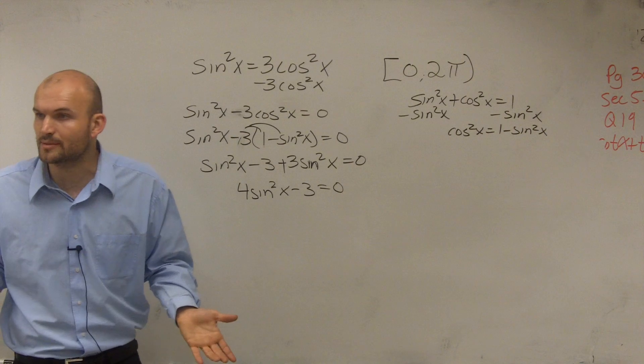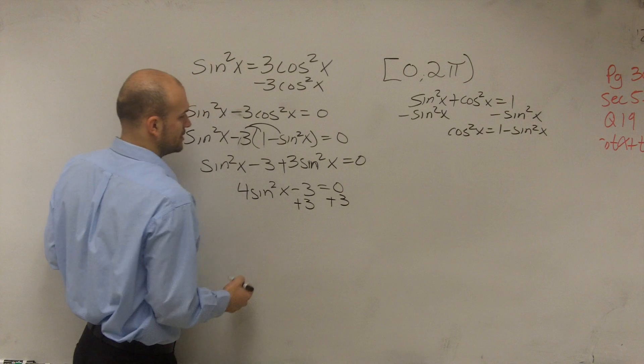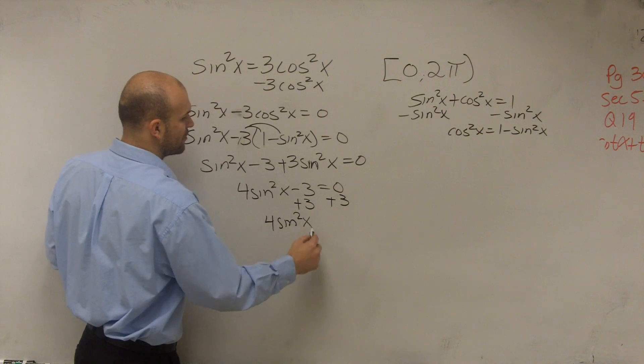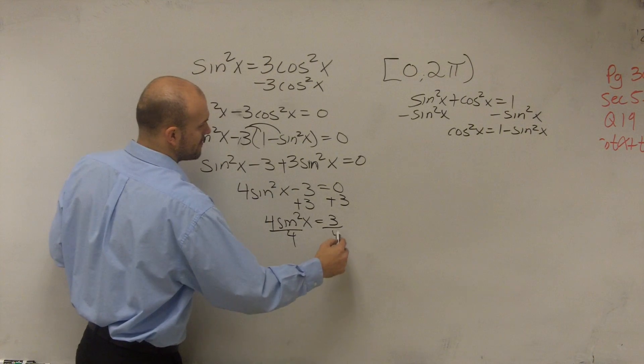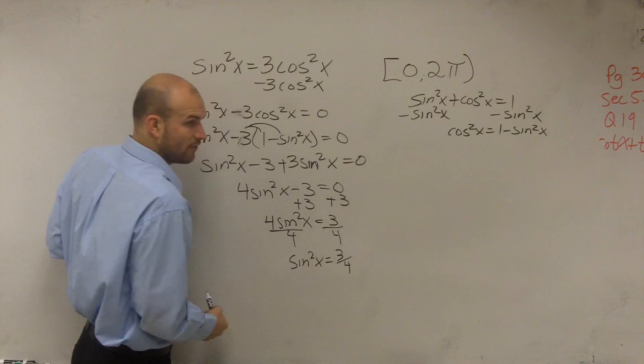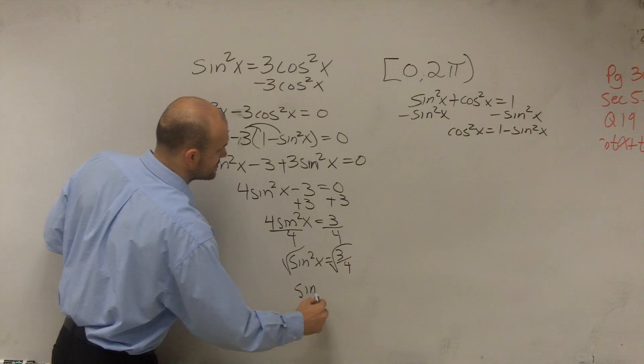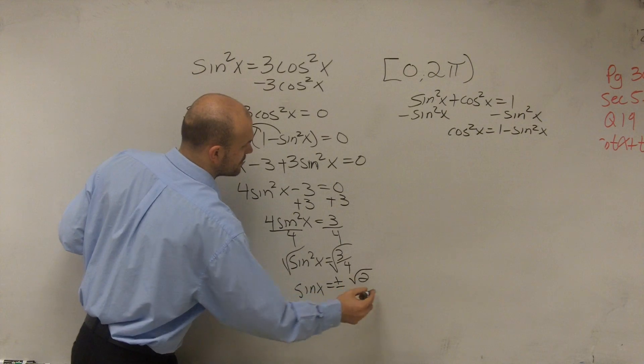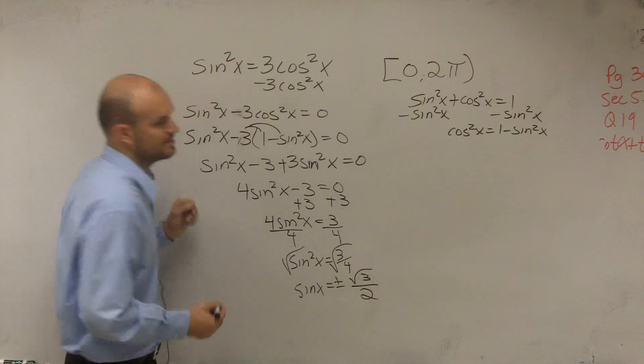And now I'm at a point that's familiar like my other two problems that I've completed. Now, I can add 3 to the other side. So now I have 4 sine squared of x equals positive 3. Divide by 4. And I get sine squared of x equals 3 over 4. Now, take the square root. So I have sine of x equals plus or minus the square root of 3 divided by 2.